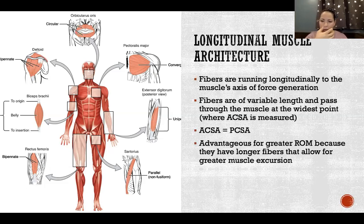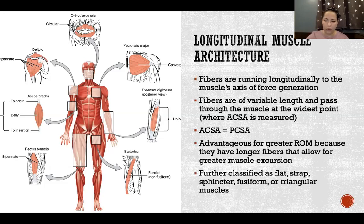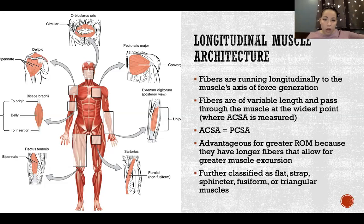Longitudinal muscles are advantageous for a greater range of motion because they have longer fibers, and longer fibers allow for greater muscle excursion — the total span of distance a muscle can shorten to and lengthen to at its maximum. Longer fibers contract to a shorter length and extend to a longer length, giving joints greater range of motion. The body often prioritizes range of motion above force amplification for normal movement.